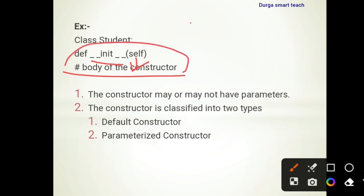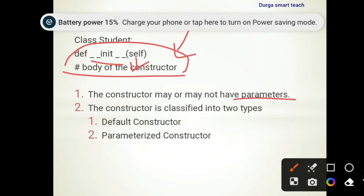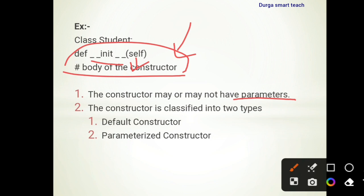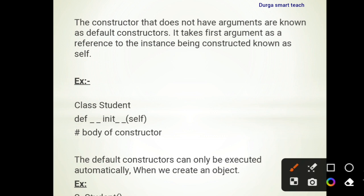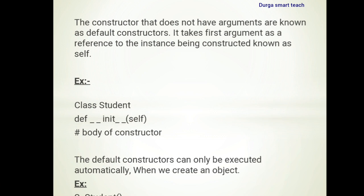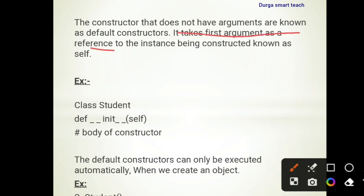The constructor may or may not have parameters, but it always contains the 'self' parameter. Constructors are classified into two types: one is the default constructor and another is the parameterized constructor. When the constructor does not have any arguments, it is known as a default constructor — it only takes 'self' as a reference to the instance being constructed.